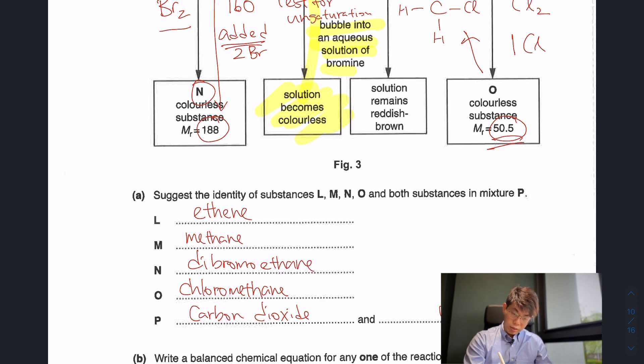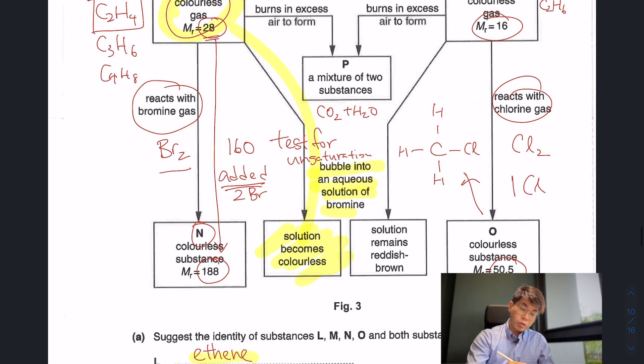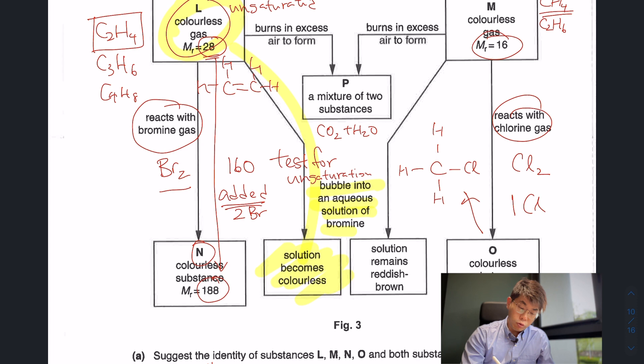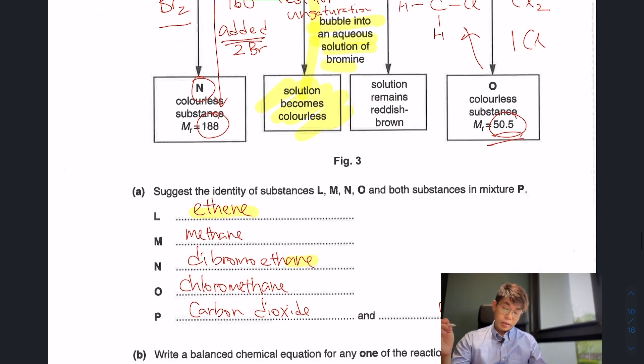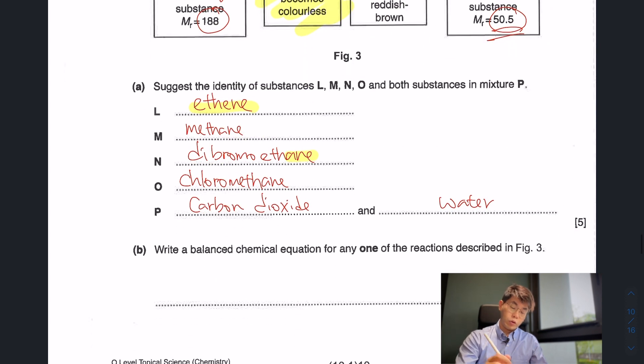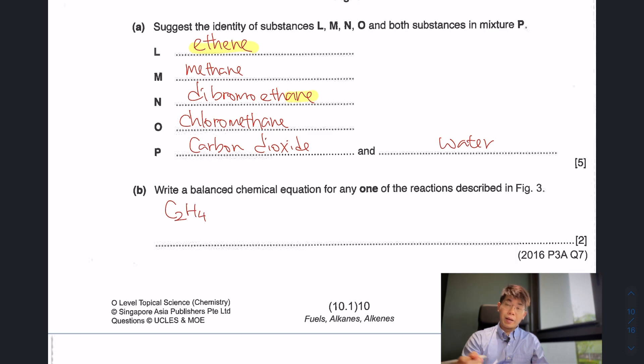When I add my two bromine atoms in, I got N. So this will be my dibromoethane. Please take note that this is dibromoethane, but this is ethene. Because when my ethene adds my two bromines, it will form dibromoethane. Now we need to write chemical equations. One of them would be C2H4, my ethene, reacting with my bromine Br2 to form C2H4Br2.